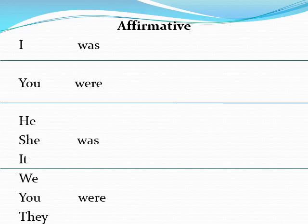We use 'was' with singular. Singular means al-mufrat. And we use 'were' with plural. Plural means al-jam'a. For example: he was, we were.